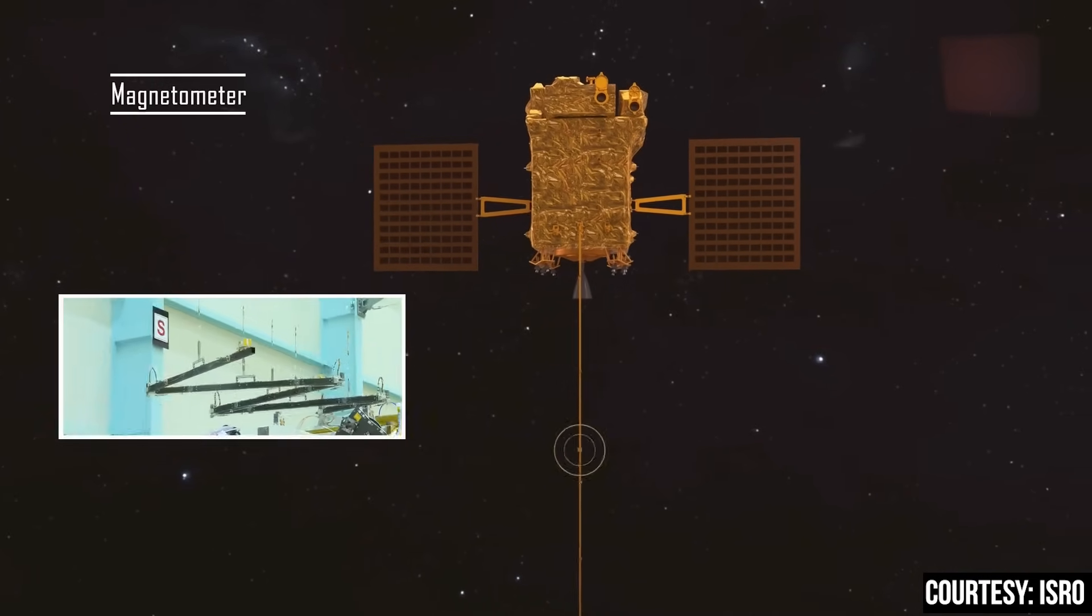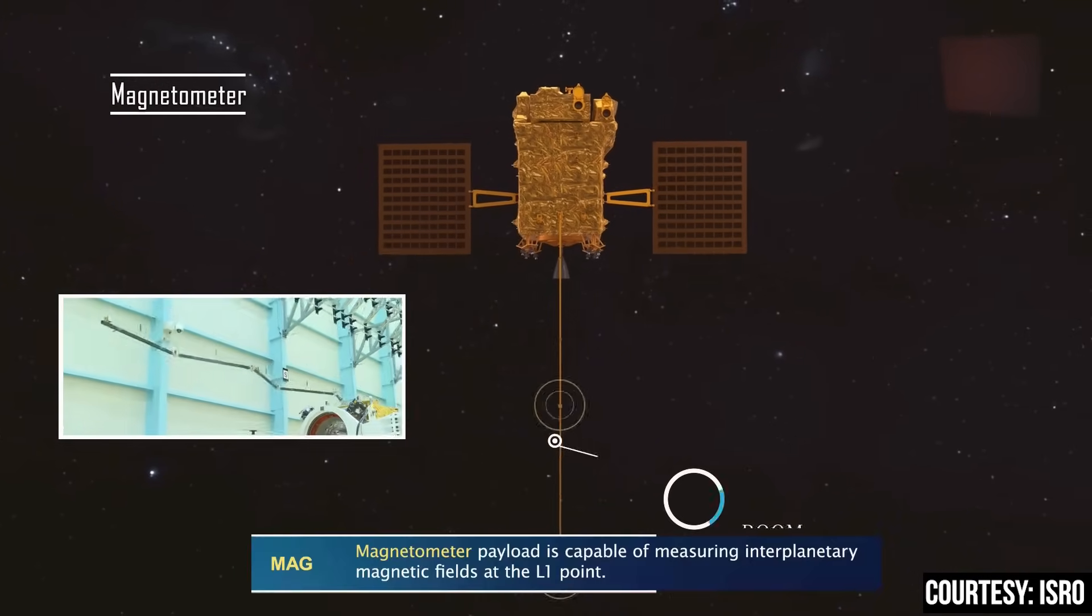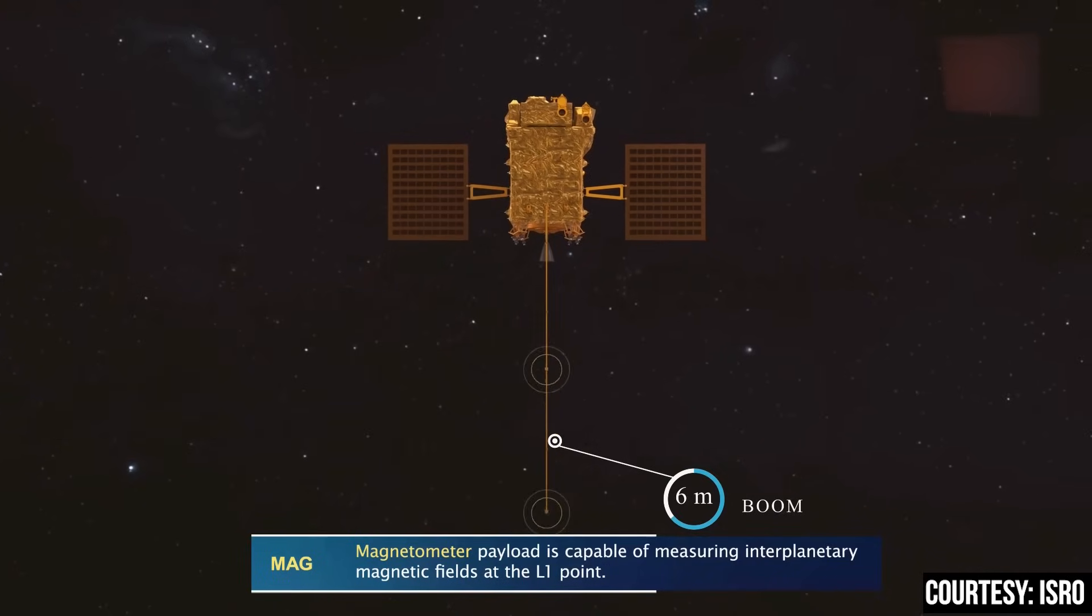The last one is the magnetometer, short form MAG. This instrument measures the magnetic fields present at the L1 point.